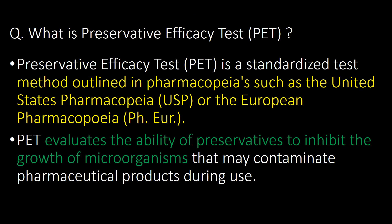What is the Preservative Efficacy Test or PET? The Preservative Efficacy Test (PET) is a standardized test method outlined in pharmacopoeias such as the United States Pharmacopoeia or European Pharmacopoeia. PET evaluates the ability of preservatives to inhibit the growth of microorganisms that may contaminate pharmaceutical products during use.